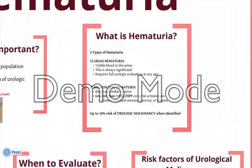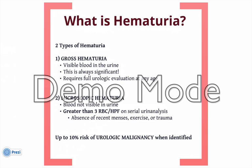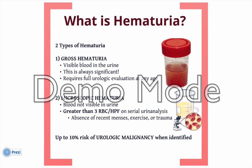So what is hematuria? Well, hematuria can be two types. The first is called gross hematuria, which is simply put as visible blood in the urine. The second is microscopic hematuria, which is microscopic red blood cells detected in the urine. Microscopic hematuria is typically defined as greater than three red blood cells per high-powered field detected on two or three serial urinalysis.